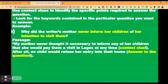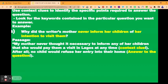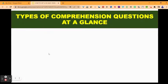Immediately after this context clue in the passage, what comes next is the answer: 'After all, no child would refuse her entry into their home.' This is the answer to why the writer's mother never informed her children of her intention to visit. So in the passage you find that my mother never thought it necessary to inform any of her children, and the next line provides the reason. After all, no child would refuse her entry into their home. This is how you answer comprehension questions.